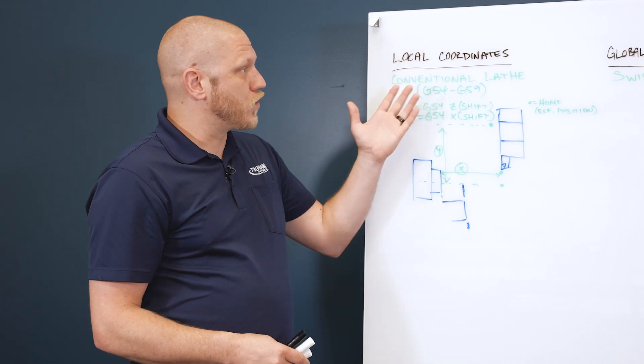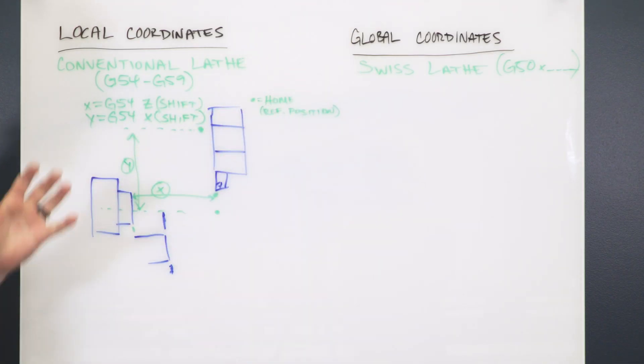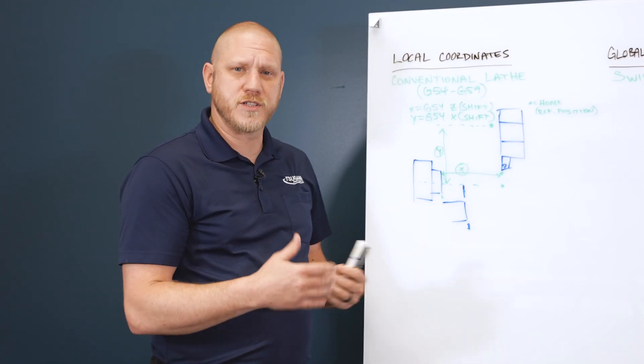A conventional lathe uses local coordinates, whereas a Swiss lathe uses global coordinates. Most people are familiar with local coordinates, so I'm going to explain how that works first and then explain how a Swiss machine utilizes global coordinates in just a little bit different way.